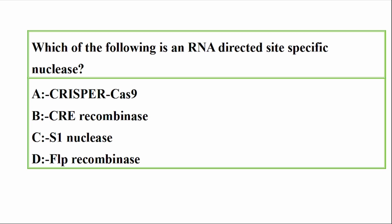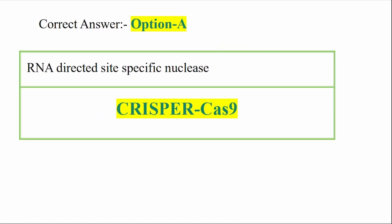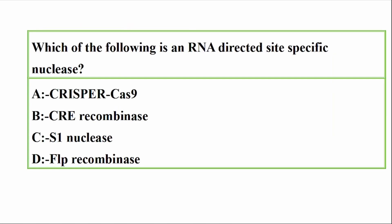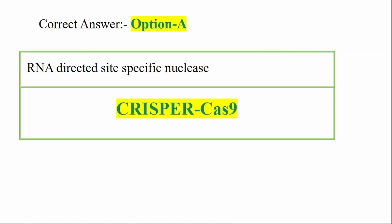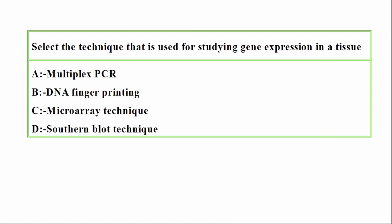Question: Which of the following is an RNA-directed site-specific nuclease? Options: A — CRISPR-Cas9, B — CRE recombinase, C — S1 nuclease, D — FLP recombinase. Correct answer: Option A — CRISPR-Cas9. The RNA-directed site-specific nuclease is CRISPR-Cas9.